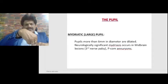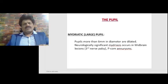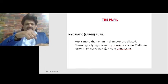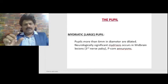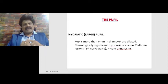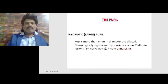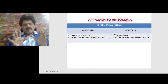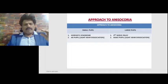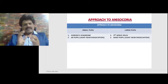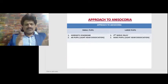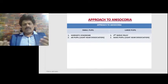So in a compressive lesion of the third nerve, like a posterior communicating artery aneurysm or herniation, the first and earliest manifestation is pupil dilatation. Whereas if it's an intrinsic palsy like diabetic third nerve palsy, the pupil is the last to get affected or sometimes it is not affected at all. That's why diabetic third nerve palsy is sometimes known as pupillary-sparing third nerve palsy. We also get light-near dissociation in two conditions: Argyll Robertson pupil, where the pupil is small, and Adie's pupil, where the pupil is large.